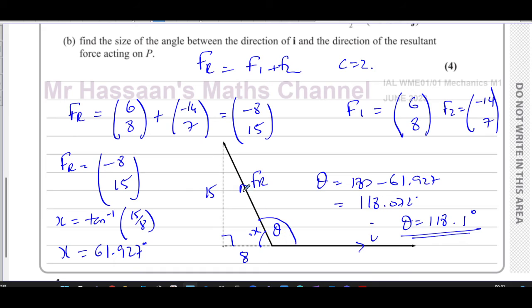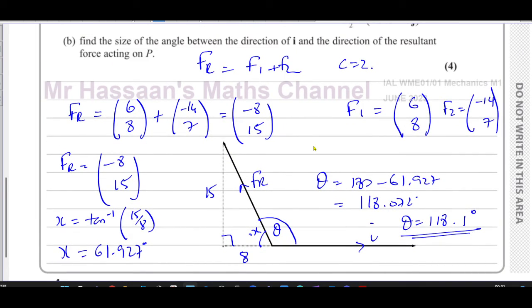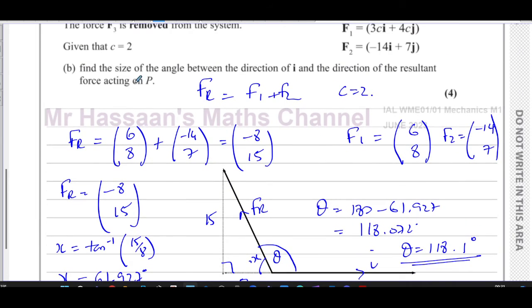That's the angle between the direction of this vector and i. Direction of i is in the positive direction this way, and this is the direction of our vector. So our angle is going to be this angle over there. So you don't just write the acute angle, you write this obtuse angle, because our vector is going in that direction. We're going to find the angle between that and positive i, not negative i. That answers part B of this question.